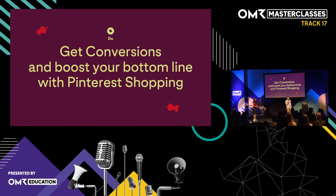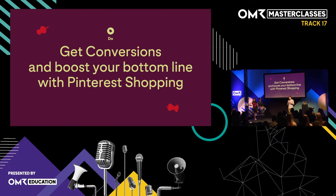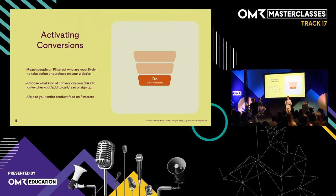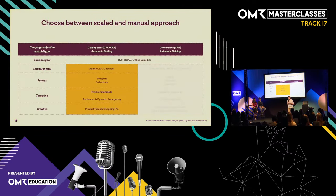Thank you, Martina. So we've come all the way from discovery to decision, and now, finally, do. Let's move to the next stage of the funnel — conversions. When we talk about conversions at Pinterest, we want to target pinners who are most likely to take an action and make a purchase. We offer the possibility to optimize towards four different kinds of conversion events: the lead, the sign-up, the add to cart, and the checkout. In addition, you can also upload a product feed onto Pinterest. These are the two main things you can use within the conversion objective.